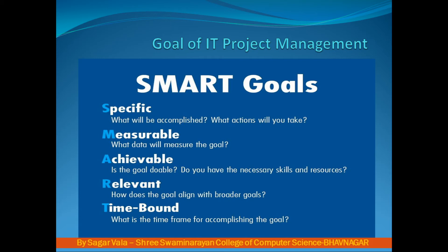The second is Measurable. The goal of the project should be measurable. What data will measure the goal? All the actions, tasks, coordination, and activities you perform for the project — through all these operations, is the goal being achieved or not? Therefore, the project's goal should be measurable.